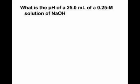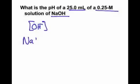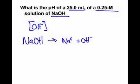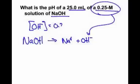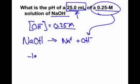One more — this one's the base. We have sodium hydroxide: 25 mL of 0.25 molar. Sodium hydroxide completely dissociates into sodium and hydroxide — strong base, like all strong substances. The concentration of hydroxide is simply 0.25. The 25 mL is extraneous information — if I mixed it and diluted it, that'd be a different thing.